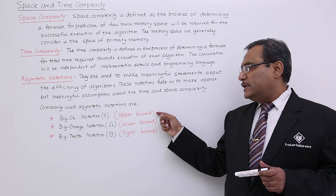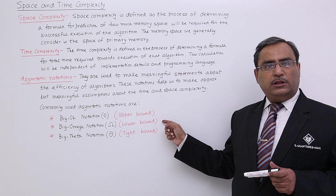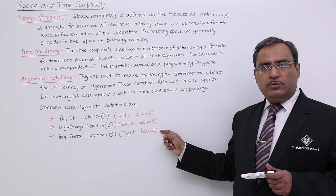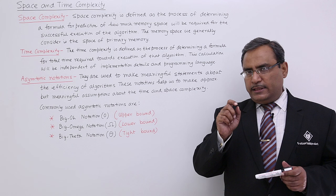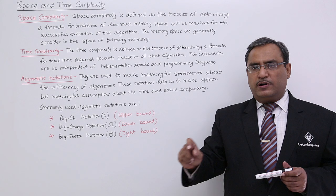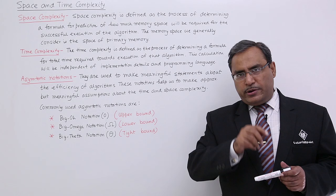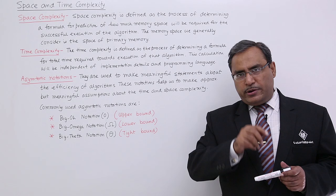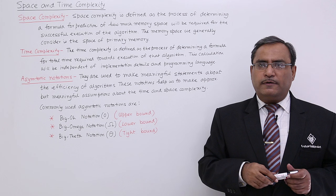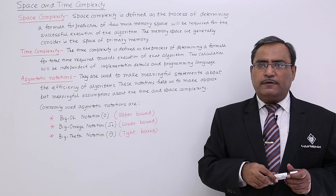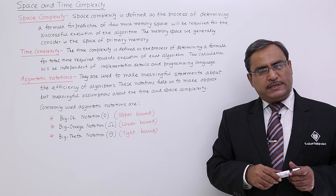In case of linear search, the worst case complexity or upper bound will be n, the best case complexity or lower bound will be 1, and the average case complexity or tight bound will be n/2. Now consider finding the maximum of n number of data. In that case, you are bound to traverse, compare, and check all n data — only then can you tell which is maximum. The first data might be the maximum, but you do not know until that data is compared with the rest. You cannot declare it as the maximum. So the best case complexity, average case complexity, and worst case complexity — all of them will be equal to n.